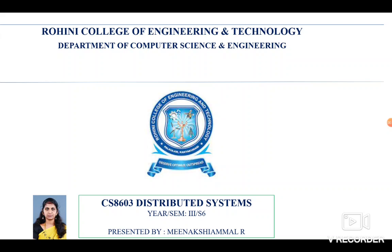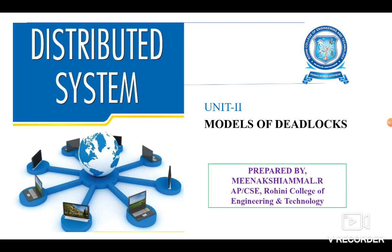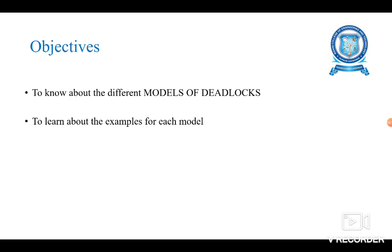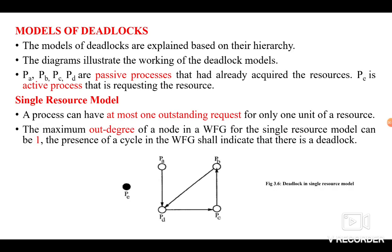Good morning students. We are discussing the course CS 8603 Distributed Systems. I am an assistant professor working in Rogini College of Engineering and Technology. Today the topic is Models of Deadlock, which comes under Unit 3. The objectives of this video presentation are to know about the different types of models of deadlocks and to learn about examples for each model.